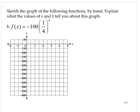Negative 100 times 1 fourth to the x. You should be kind of getting used to this now, a table of values: x versus f of x.